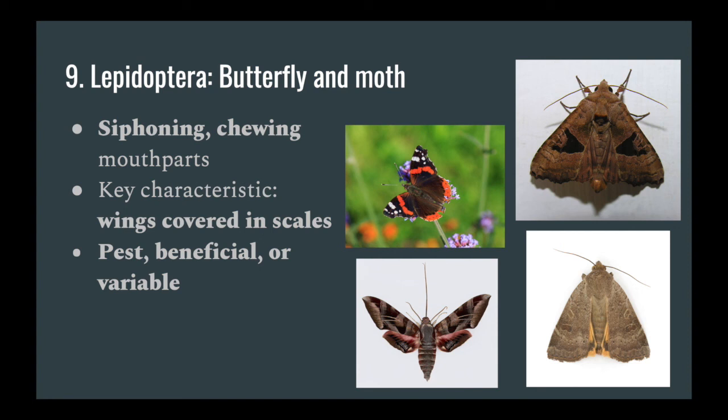Lepidoptera are very good pollinators — when people think of pollinators, it's typically Lepidoptera, so butterflies and moths, that are first thought of, although bees come in as a close second. They serve many different ecological roles depending on their life cycle. Typically immatures or larvae will be considered to be agricultural pests, while adults will be very good pollinators.